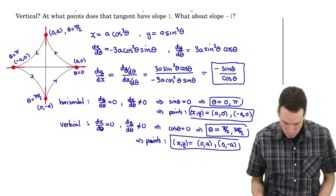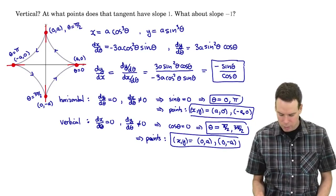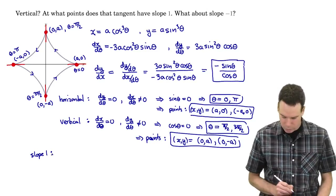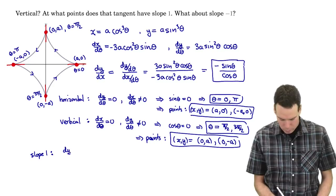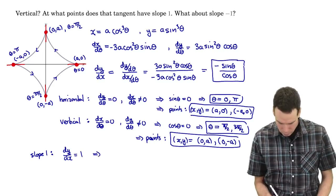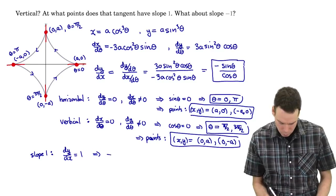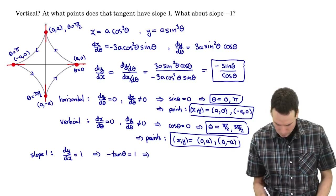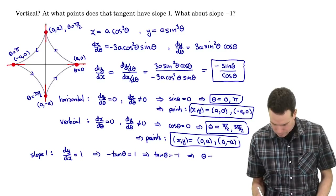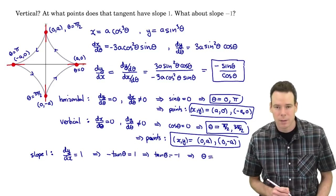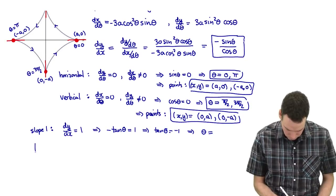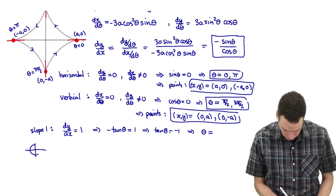Now what about when the tangent has slope 1 and slope −1? Where the slope is 1: dy/dx equals 1, which means negative sine over cosine equals 1, and that's also just a tangent function — so it's when negative tan theta equals 1, or equivalently when tan theta equals −1. When is tan theta equal to −1?